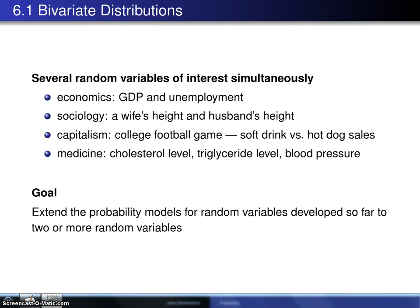Section 6.1 takes up the topic of bivariate distributions. Everything we have looked at before has been a univariate random variable — that is, there is one random variable in play at a time. Now what we do in this particular section is bring that up to bivariate random variables, looking at two random variables at a time. In the last section, we will generalize that to looking at n random variables at a time.